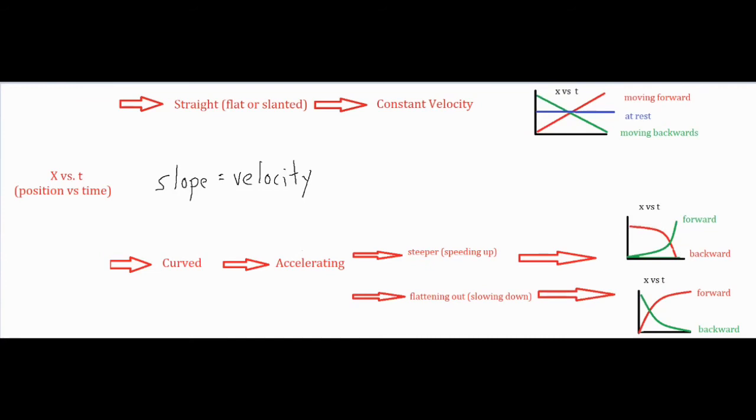A common misconception is a line that's going down means slowing down, but all that means is that it's starting at a position that's far away and then it's becoming closer and closer to zero. But if you take a look at the line, it does get steeper and steeper, which means the rate at which it's moving is increasing. It is going faster and faster.